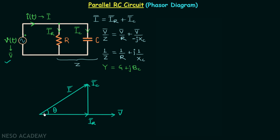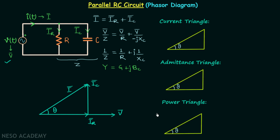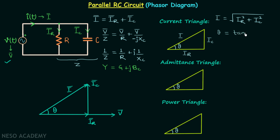This is our phasor diagram, and this triangle is our current triangle. In the current triangle, the hypotenuse represents current I, one side represents IC, and the other side represents IR. Therefore, I equals the square root of (IR² + IC²). The power factor angle theta equals tan⁻¹(IC / IR), and the power factor cos theta equals IR / I. The power factor is leading because we have a capacitor.